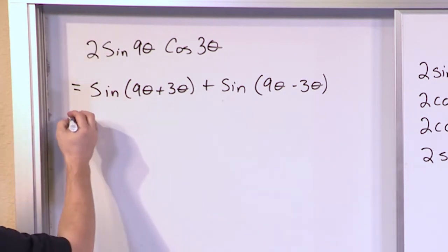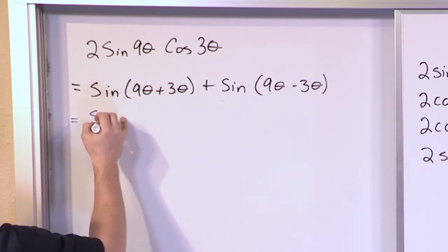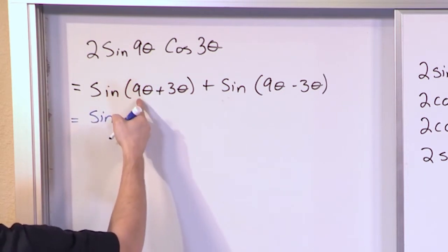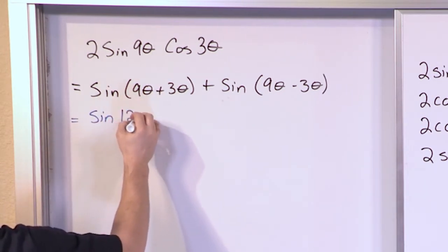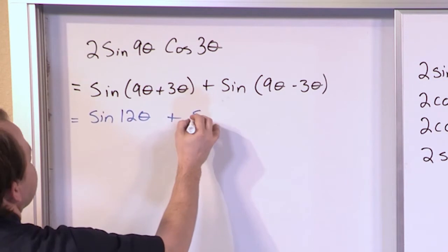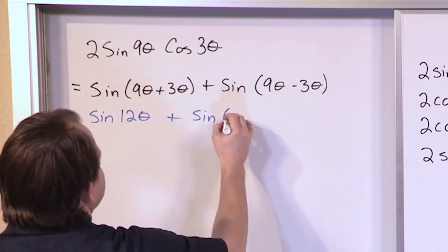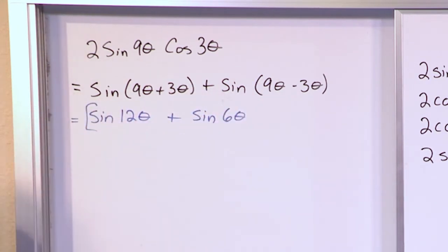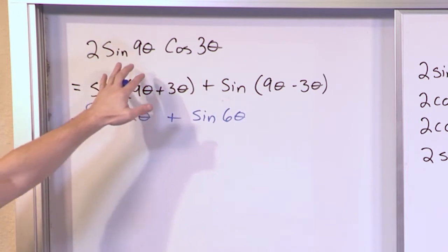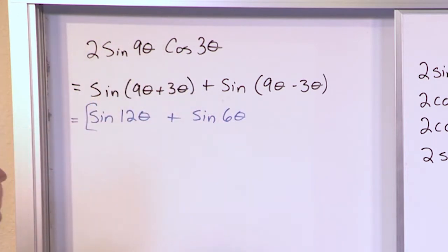And I think you'd all agree that inside here, sine is going to be 9 plus 3 is 12 theta plus the sine, 9 minus 3, is 6 theta. And this is the final answer, sine of 12 theta plus sine of 6 theta. So if you're trying to go from a product to the sum of two trig functions, you would use these identities to pull that off.